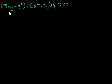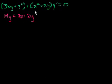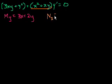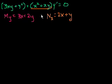How do we test that? We take the partial derivative of the first expression — call it M — with respect to y. The partial of M with respect to y is 3x plus 2y. And the second expression is our function N; we take the partial with respect to x and get 2x plus y. In order for this to be an exact differential equation, the partial of M with respect to y would have to equal the partial of N with respect to x. But they don't equal each other, so this is not an exact differential equation.